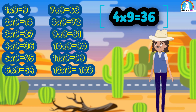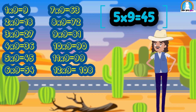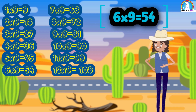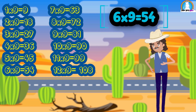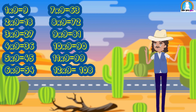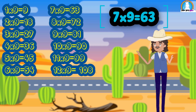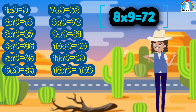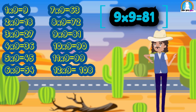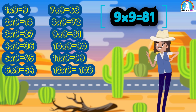4 times 9 is 36. 5 times 9 is 45. 6 times 9 is 54. 7 times 9 is 63. 8 times 9 is 72. 9 times 9 is 81.